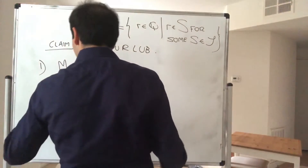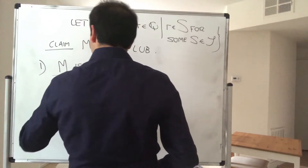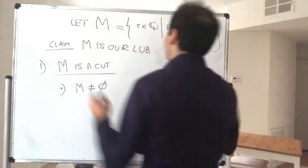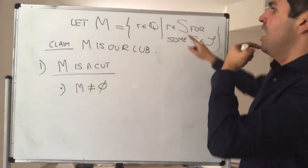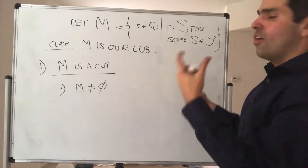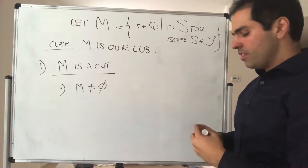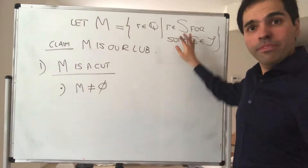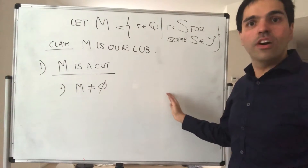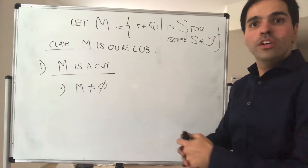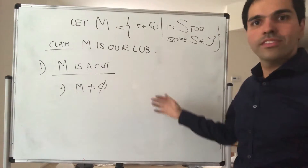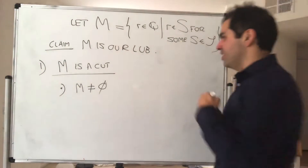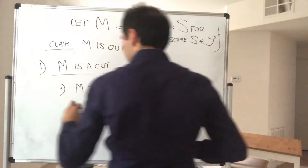First of all, M is not empty. That's clear because our cuts are not empty and you're just taking the union of cuts — taking bigger and bigger sets. So if one of them is not empty, the union is not empty. That's not a problem.